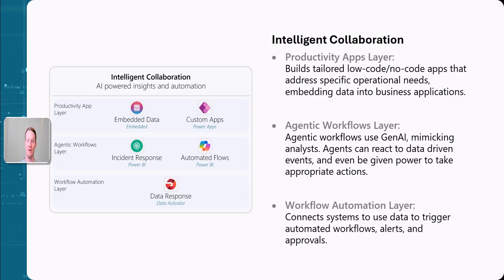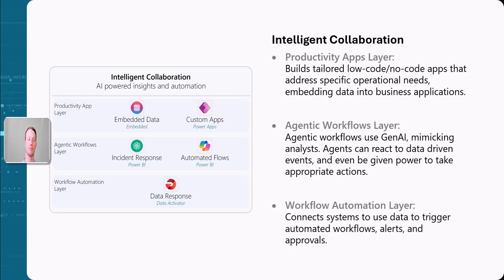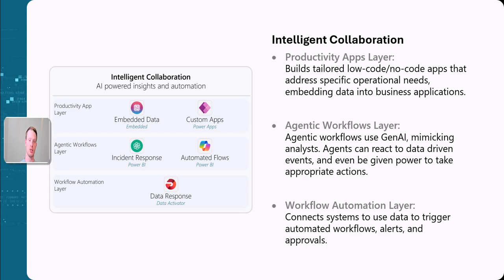The next component is the intelligent collaboration component. This is really about taking your data and using it in different parts of the business outside of just reporting — using your data to enhance business processes. We have the productivity app layer, where you can build apps using your data. This can be embedded in other tools such as your external website or other applications, or you can build custom apps using low code tools such as Power Apps.